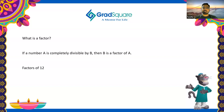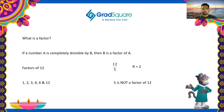Those numbers are its factors. When we say completely divisible, it means it leaves a remainder of zero. When you divide 12 by 5, the remainder is 2, and hence 5 is not a factor of 12. As long as the number is small, we can figure out the number of factors easily. When the number becomes very large, we need a systematic method to find the number of factors.